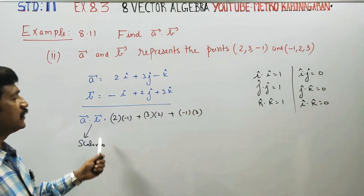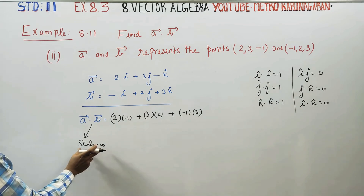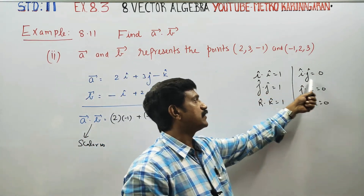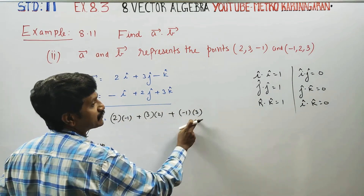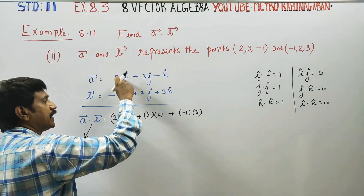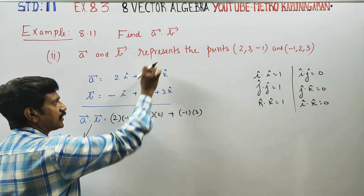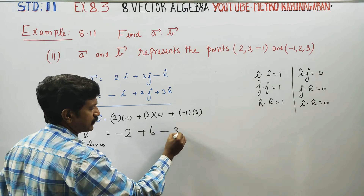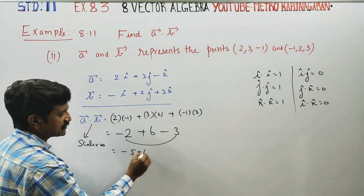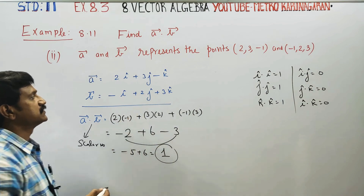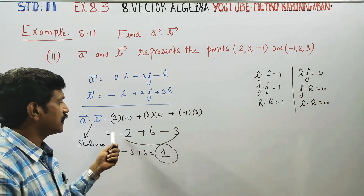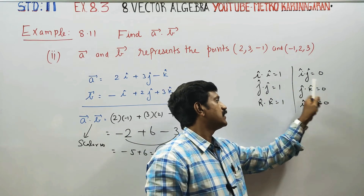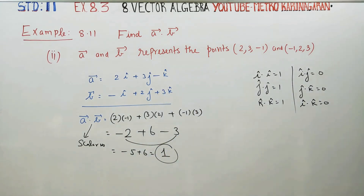This is dot product, also called scalar product. The answer: 3 terms — 1 times 3 is... 2s are 6, minus 3, minus 5 plus 6. Your answer will be 1. Just multiply I components with I, J with J, K with K, then add. You just need to know the rules: I dot I, J dot J, K dot K — same letters give answer 1, different letters give answer 0 in dot product. Thank you.